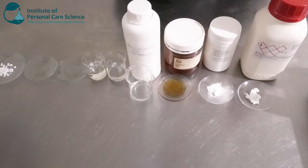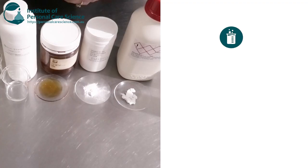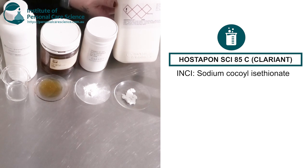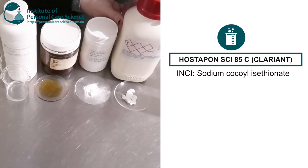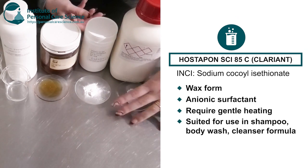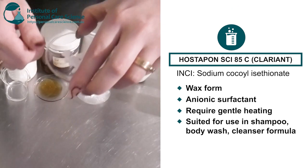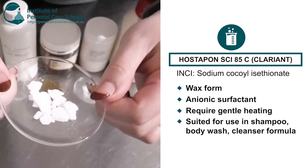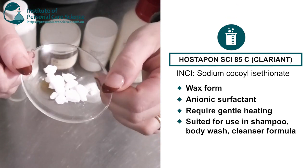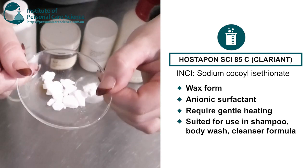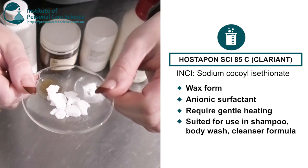Now let me show you a few examples of the many different types of surfactants and their forms. So firstly I'm going to show you a few different types of anionic surfactants. So these are what do the cleansing in cleansing products. So firstly I've got the Hostapon SCIC from Clarion. So as you can see here this is in a wax form and this is an isothionate. So this would need gentle heating. This is really good for shampoos, body washes and also cleansers.